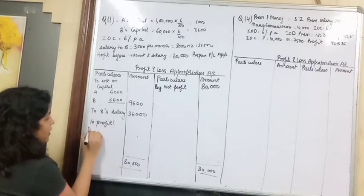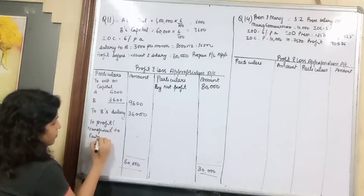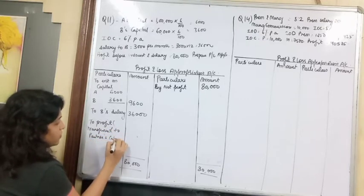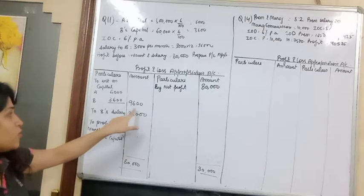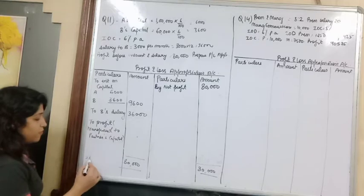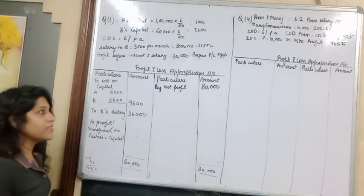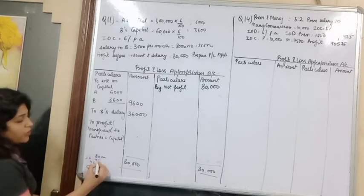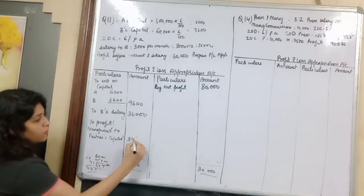We'll write in brackets - transfer to partners capital account. Let's calculate how much we get. 36,000 plus 9,600. This becomes 45,600. Subtract 45,600 from 80,000 - we get 34,400. This is the profit.